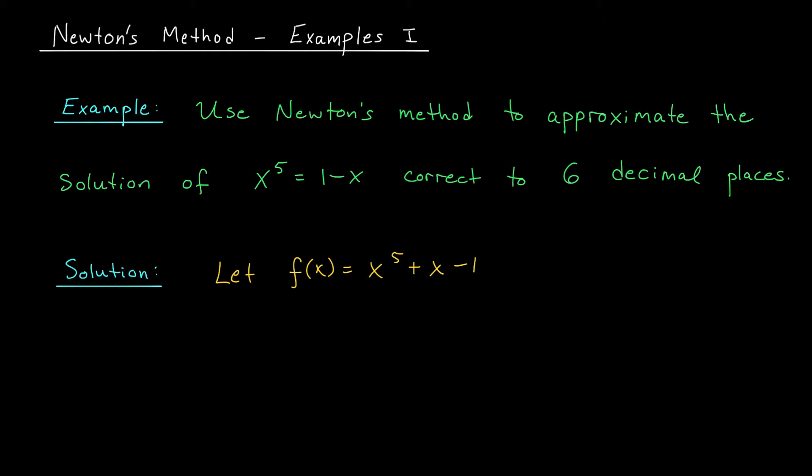To do this, Newton's method says that we need an initial guess that's hopefully close to the root. I'll remind you how this was done in the overview video. From the overview, we noted that f of 0 was minus 1, while f of 1 was plus 1. So by the intermediate value theorem, there must be a root somewhere between 0 and 1.